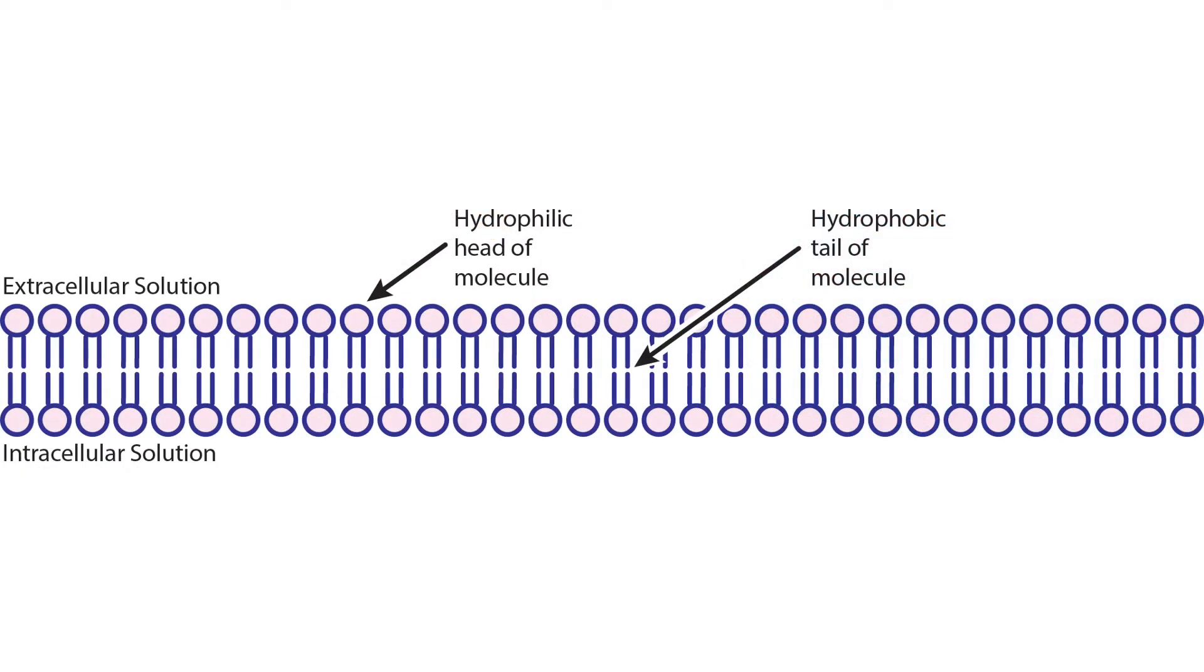Ion flow into and out of the neuron is a critical component of neuron function. Ions move in predictable ways, and the control of ion movement affects the cell at rest and while sending and receiving information from other neurons.